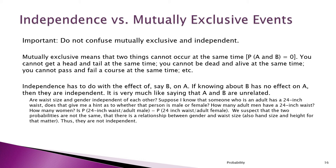Again, if the probability of A given B equals the probability of A, then A and B are independent. If the probability of A given B is not equal to the probability of A, then there's some kind of relationship — they're not independent.